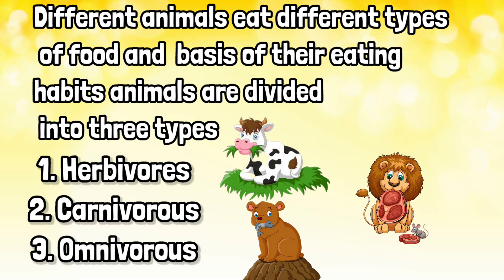Different animals eat different types of food. Based on their eating habits, animals are divided into three types: Herbivores, Carnivores, and Omnivores.